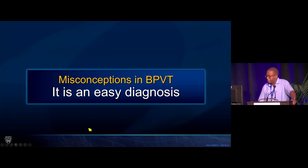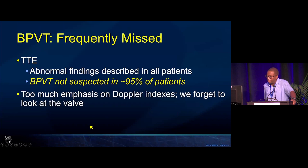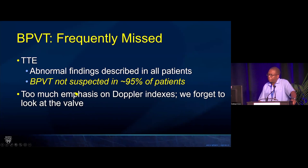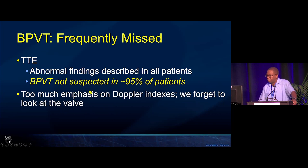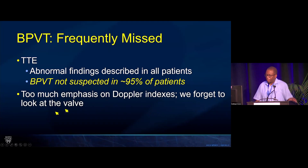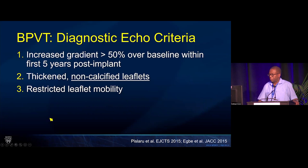Another misconception is that this is an easy diagnosis to make, but actually it's not. When we looked at our data, patients that had bioprosthetic valve thrombosis had abnormal findings described in echo reports, but the diagnosis of bioprosthetic valve thrombosis was not suspected in more than 95% of patients. There was something wrong with the valve, but we weren't identifying it as bioprosthetic valve thrombosis — too much emphasis on Doppler indices, noting it's dysfunctional with a high gradient, but not paying attention to the exact mechanism of dysfunction.